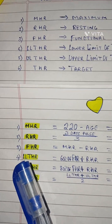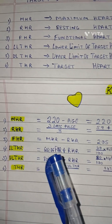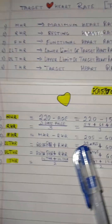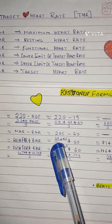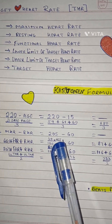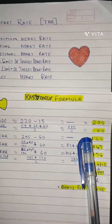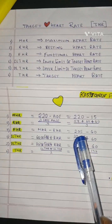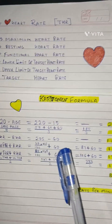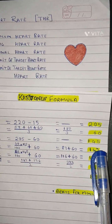Fourth step: Take the Lower Limit of Target Heart Rate, which is 60% of FHR plus RHR. That is 60 divided by 100, multiplied by 145, plus 60. When we solve this, we get 87 plus 60, which equals 147.